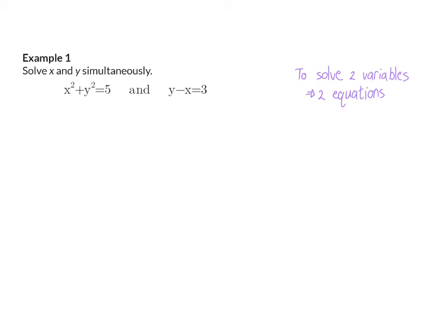My first step will be to identify the variable that I can get alone very easily. So in this case, I'm going to start off by getting y alone in the second equation, because I do that by adding x on the right. I can choose to get any variable alone, but if I, for example, had a look at my first equation and chose to get y alone, I would have had to take the square root, and that would have unnecessarily complicated my question to work with square roots.